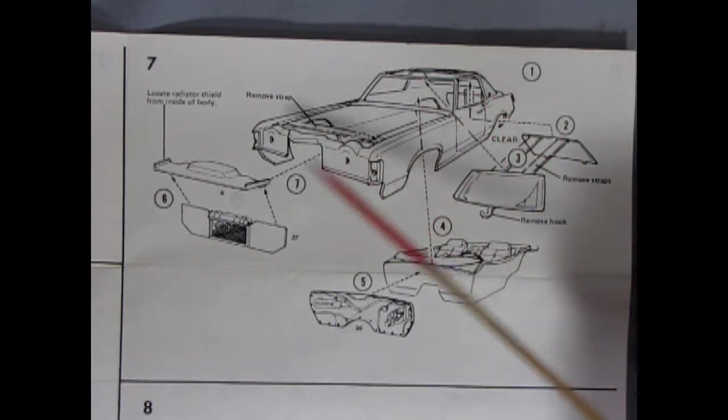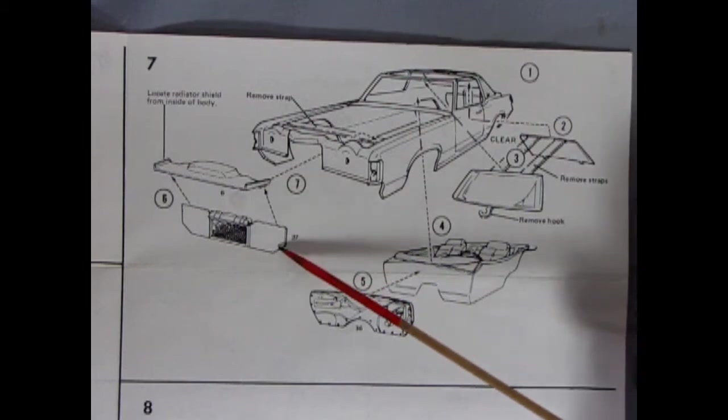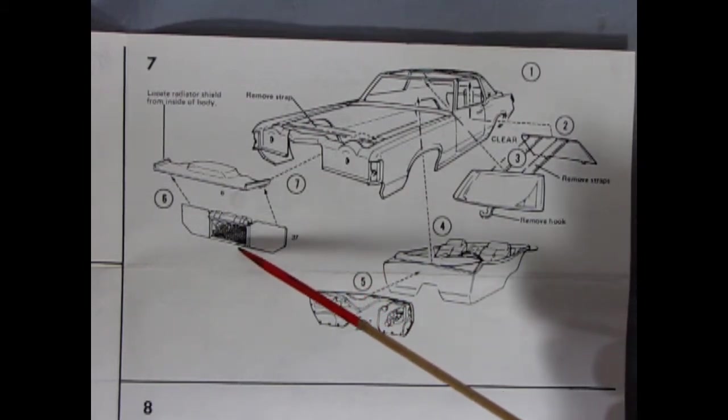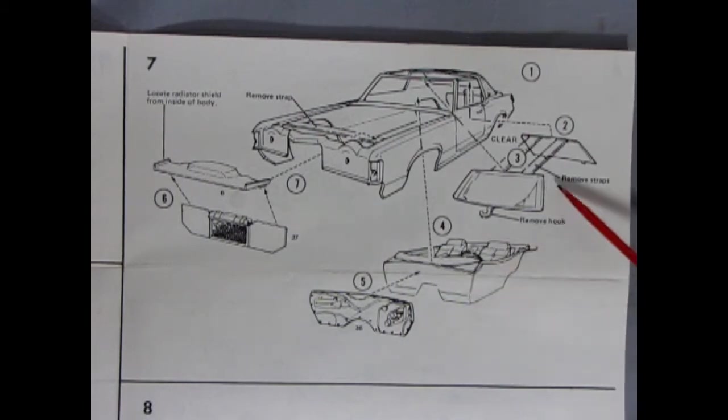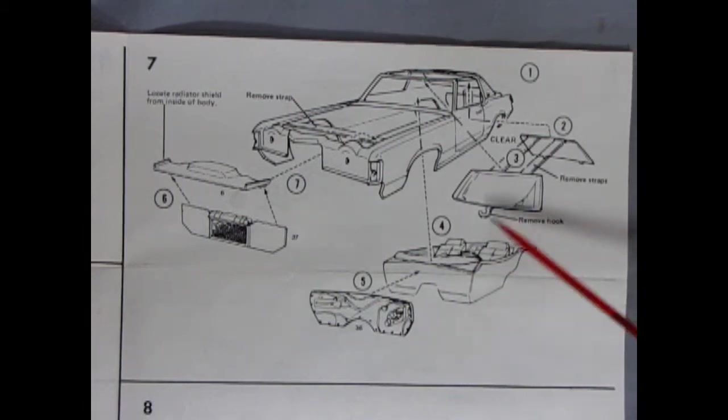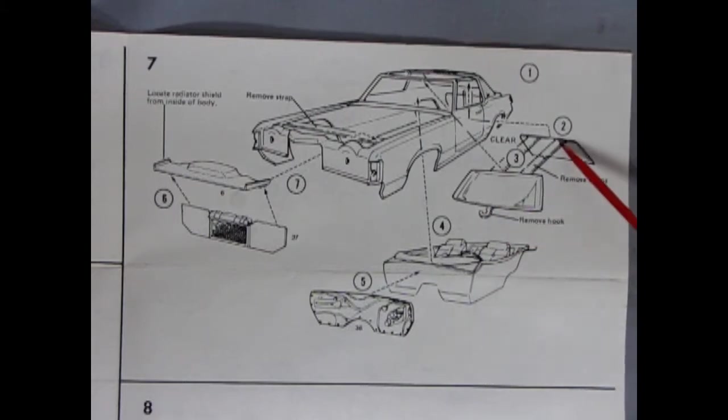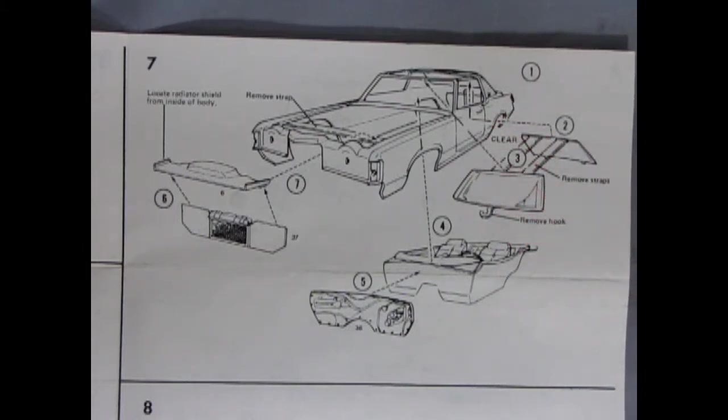Here's our body and we've got a radiator shield and our radiator wall as well as our radiator. Then we've got our firewall gluing onto the interior. We have to remove our hook and remove the straps to glue our windshield and back glass into place.